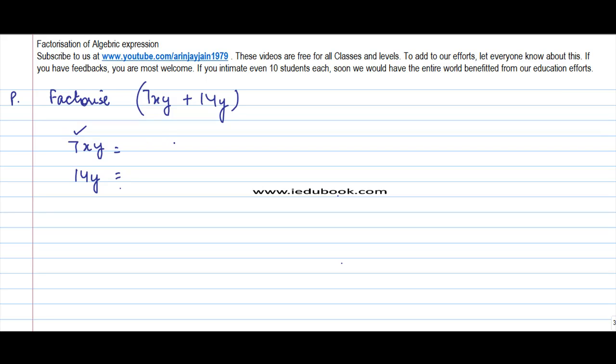So I can write this as 7, always leave some space so that in case there's something that needs to be plugged in. Normally this will contain numbers, and then there are variables. So whenever you are doing the factorization, keep some gap between the numbers. So I can write this as 7 into x, x into y.